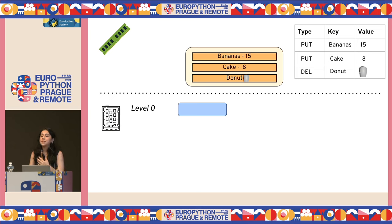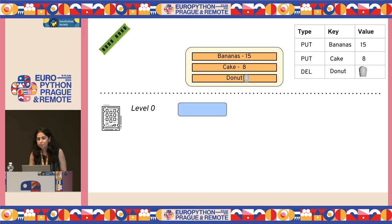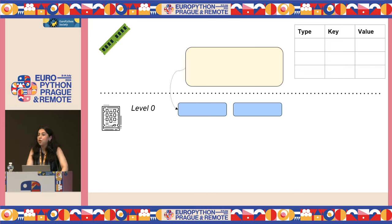For deletes, you do the same thing — nothing is being physically erased from the database. You create a new key-value pair with the same key and a special value called a tombstone. This value is basically telling RocksDB that this record is no longer valid. Once our in-memory buffer is full again and it's time to trigger a flush, this file is also written as an SST file on level zero.